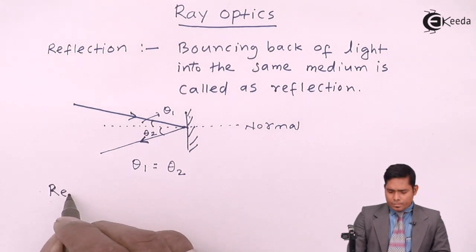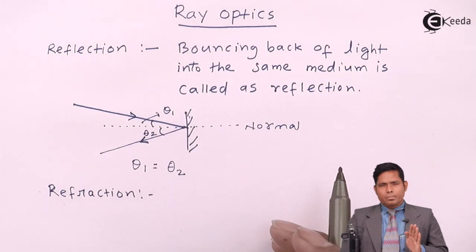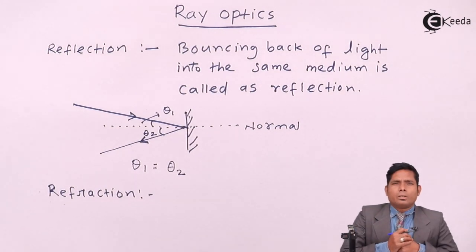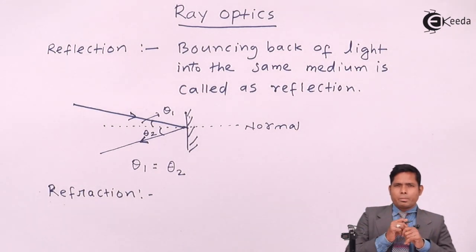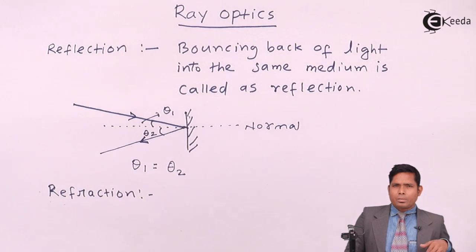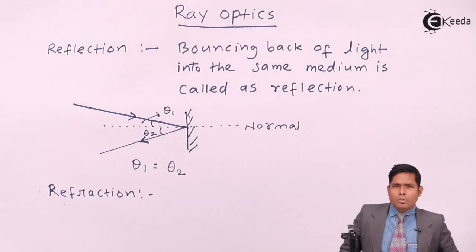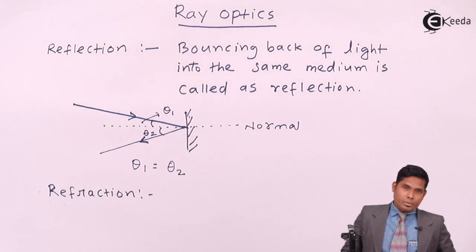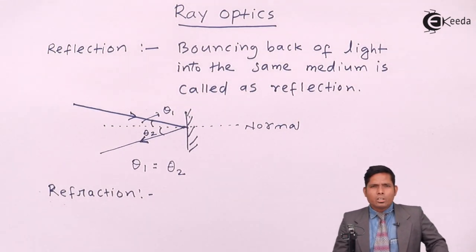Now, what is refraction? Refraction is when light traveling in one medium enters another medium of different optical density. These two media should not be identical — one medium must be different from the other, and both must be transparent so that light can pass through. When light from one medium enters another optically different medium, this phenomenon is called refraction, whether or not the direction changes depends on the nature of incidence of the incident ray.